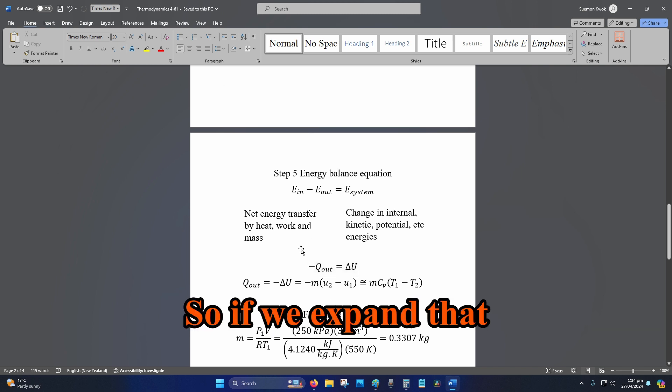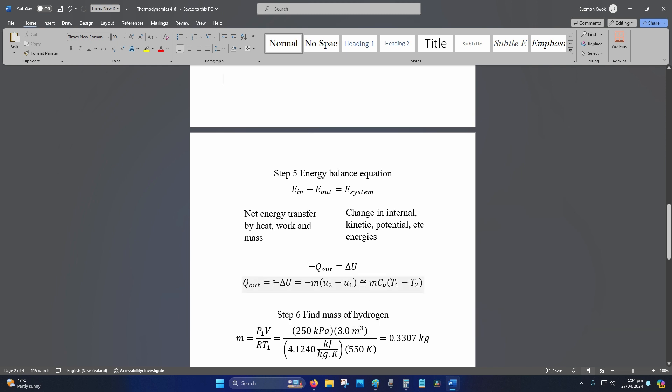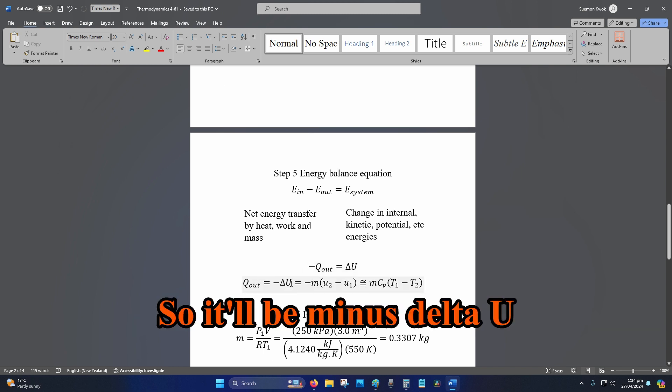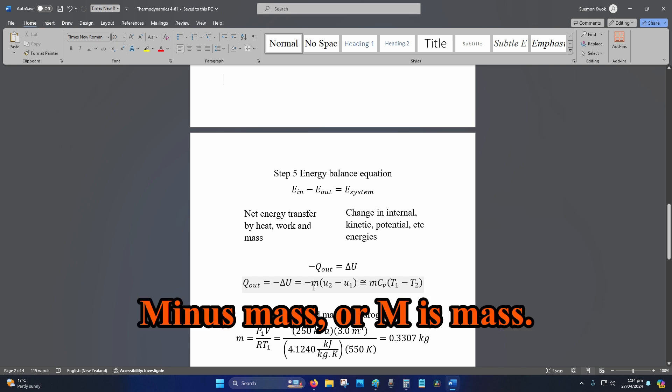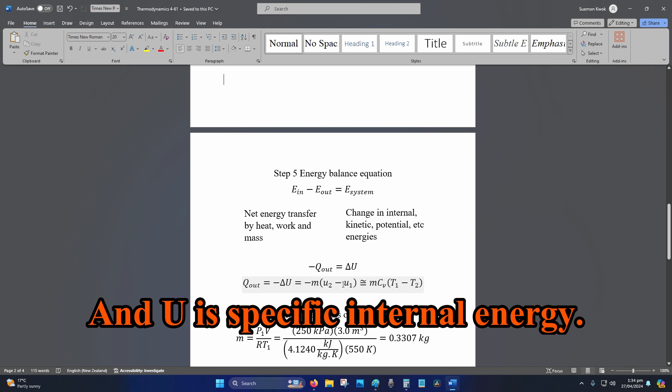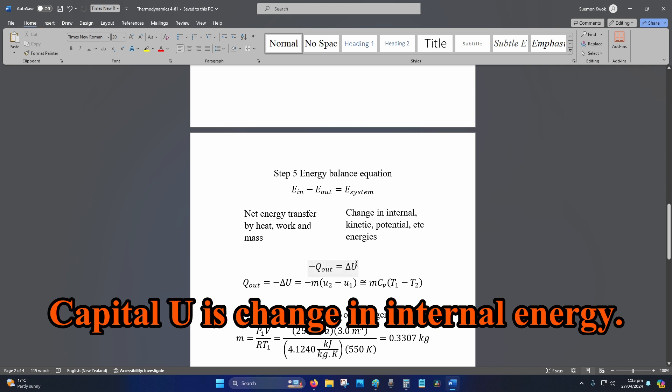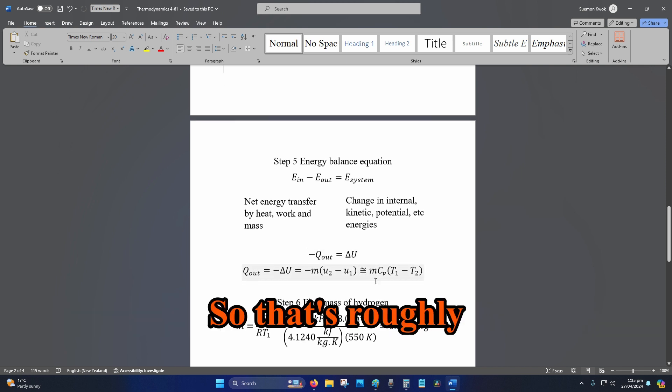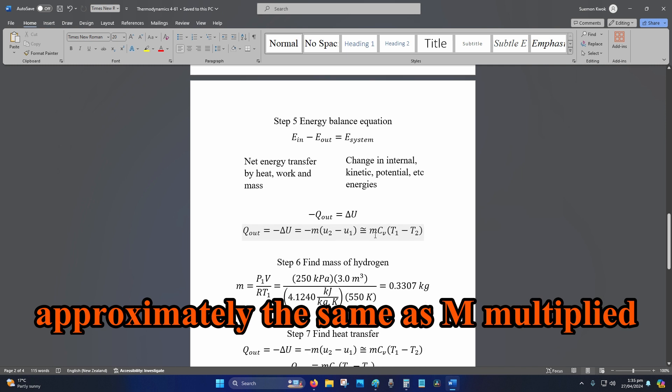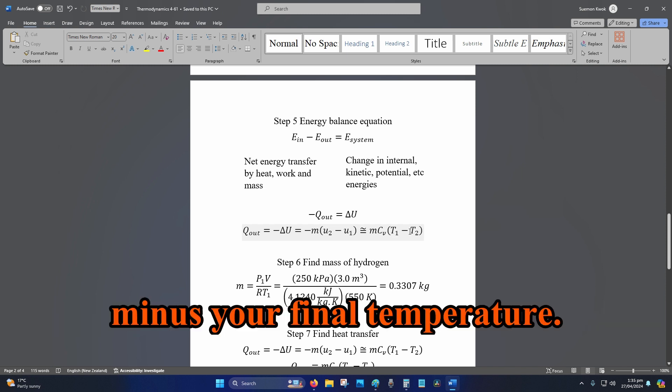If we expand that out, it will be minus Q out. In this case, we bring the minus to the other side, so it will be minus delta U is equal to minus mass. M is mass. U is specific internal energy. Capital U is change in internal energy. That's roughly approximately the same as M multiplied by CV multiplied by initial temperature minus your final temperature.